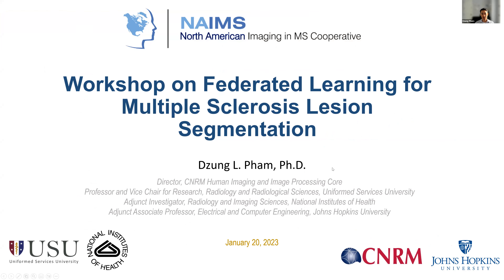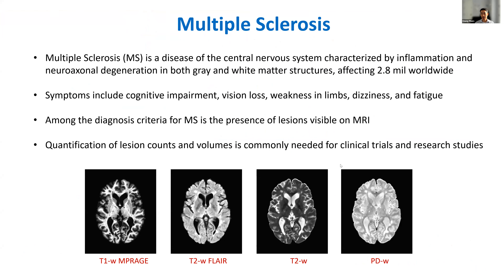Just to give you some context about multiple sclerosis for those of you who don't work in this field: MS is a disease of the central nervous system characterized by inflammation and neurodegeneration, both gray and white matter. It's affecting almost 3 million people worldwide, and some of the symptoms include cognitive impairment, vision loss, weakness in limbs, dizziness, and fatigue.